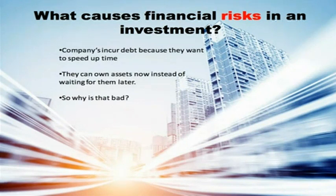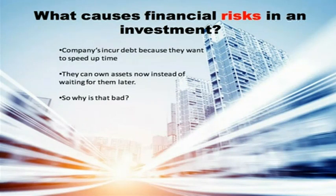If you think about it in these terms: if a person is going to go out and buy a $300,000 house and they're going to take out a loan in order to buy it, the reason they're incurring that debt is because they want to speed up time. They don't want to wait 15 to 20 years to save up enough money to buy that home. Instead, they're going to take out the debt and speed up time so they can move into that house right now.